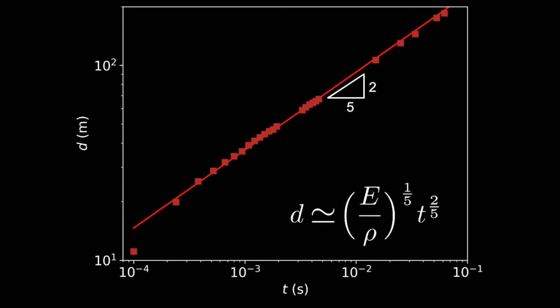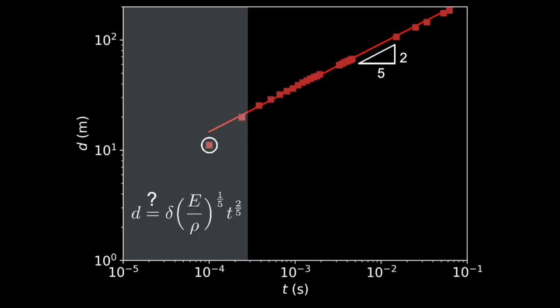The second episode showed that this scaling applied to a large class of small and large explosions. In the last episode, we got more precise and introduced the Taylor set of constants, called delta in its reduced form. Yet, we alluded that the explosion seems to depart from this scaling at very short timescales. We will see in the next episode that these doubts are well founded.